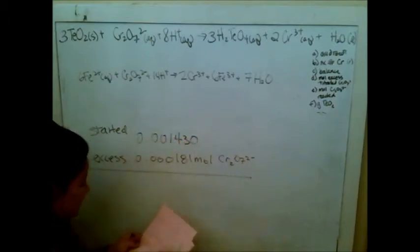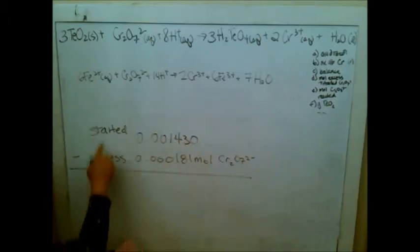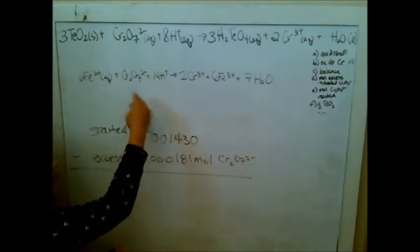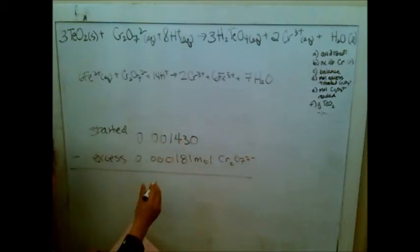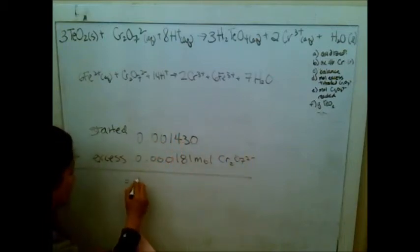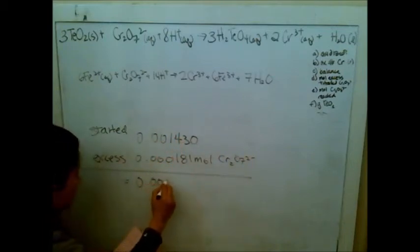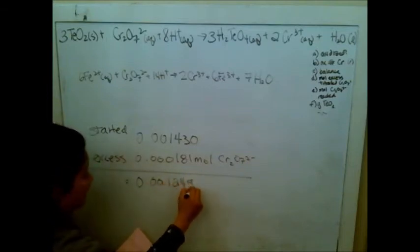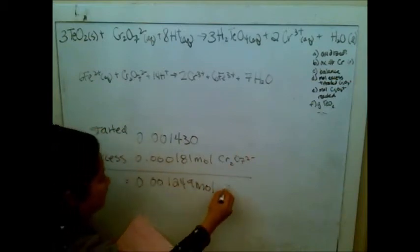0.001430. And when I subtract that out, so what I started with in the given molarity of this guy, what was excess, meaning what was left over after I reacted, I do that subtraction and I end up with 0.001249 moles are left.